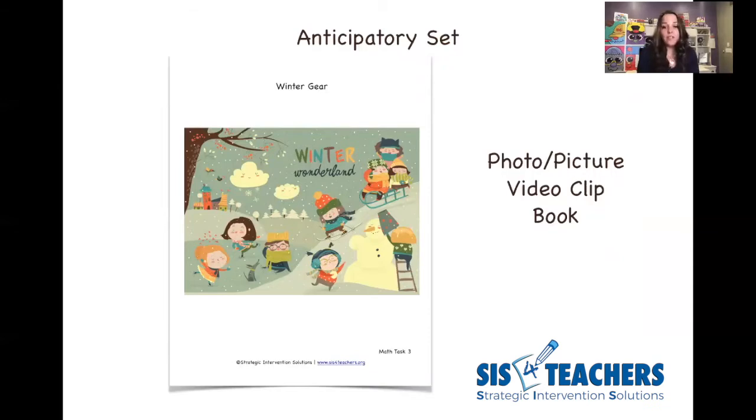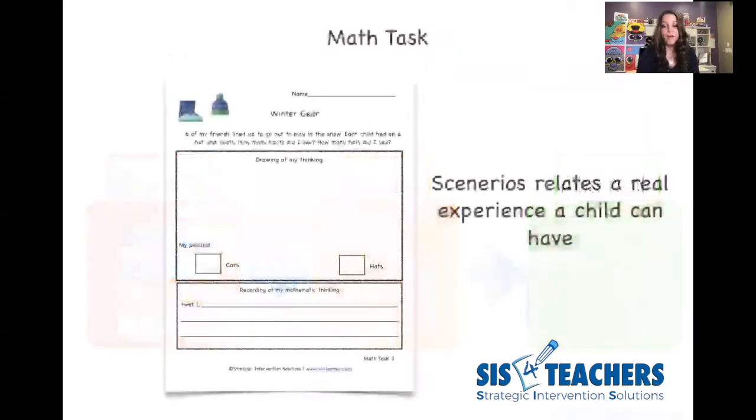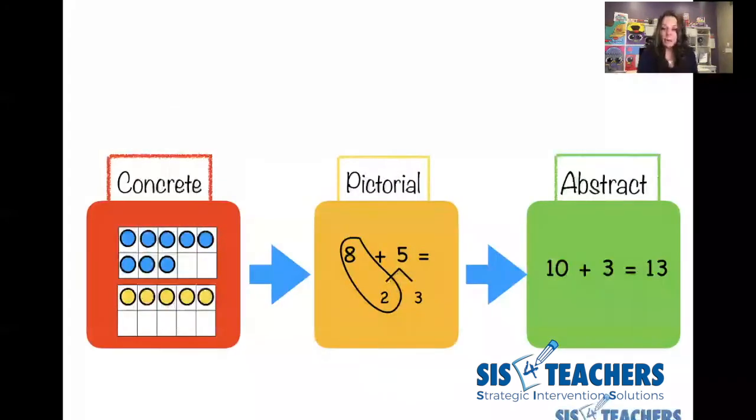Don't worry, you won't give away the task from the anticipatory set because the child will eventually have to act this out concretely, pictorially, and abstractly. So even though you're having conversations about it doesn't necessarily mean that you're giving away the answer to what you're doing. We're going to focus a lot on concrete pictorial abstract because we want to make sure that children don't just understand these concepts with these tasks at just a low basic level of just acting it out. But can they draw a picture to explain their thinking? Can they tell you about their mathematical thinking? Can they do an equation with it?